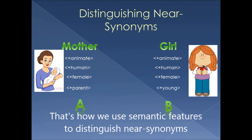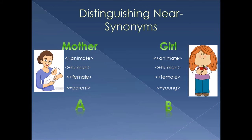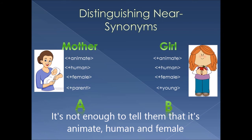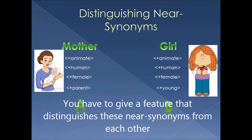That's how we use semantic features to distinguish near synonyms. If someone doesn't know the meaning of 'mother' or 'girl,' it's not enough to tell them they're both animate, human, and female. You have to give the features that distinguish these near synonyms from each other.